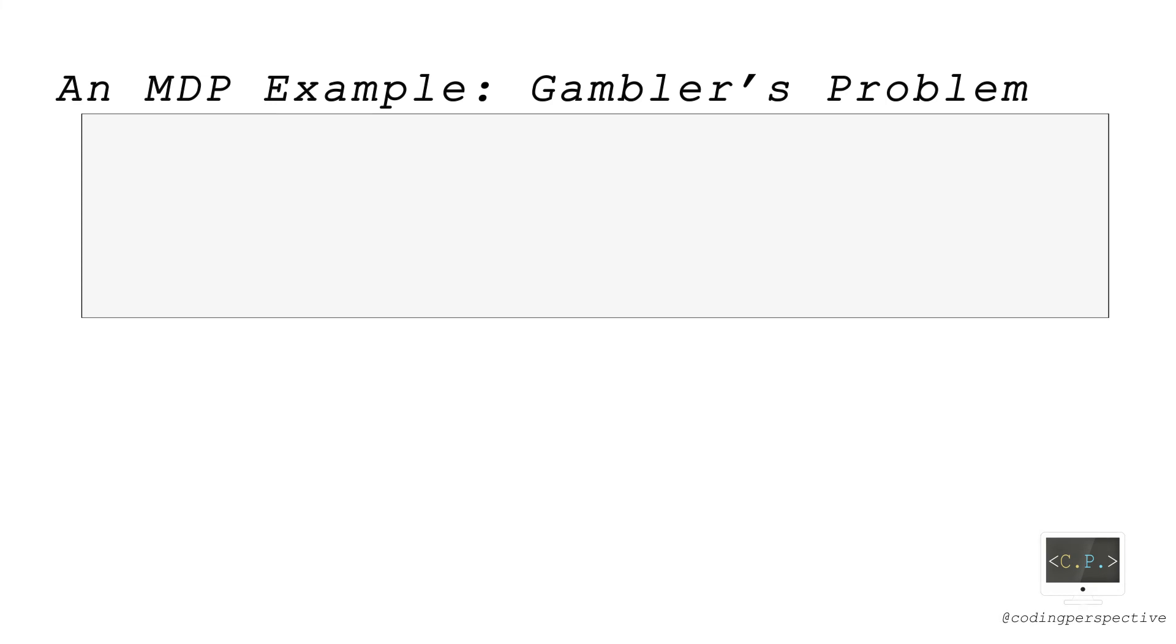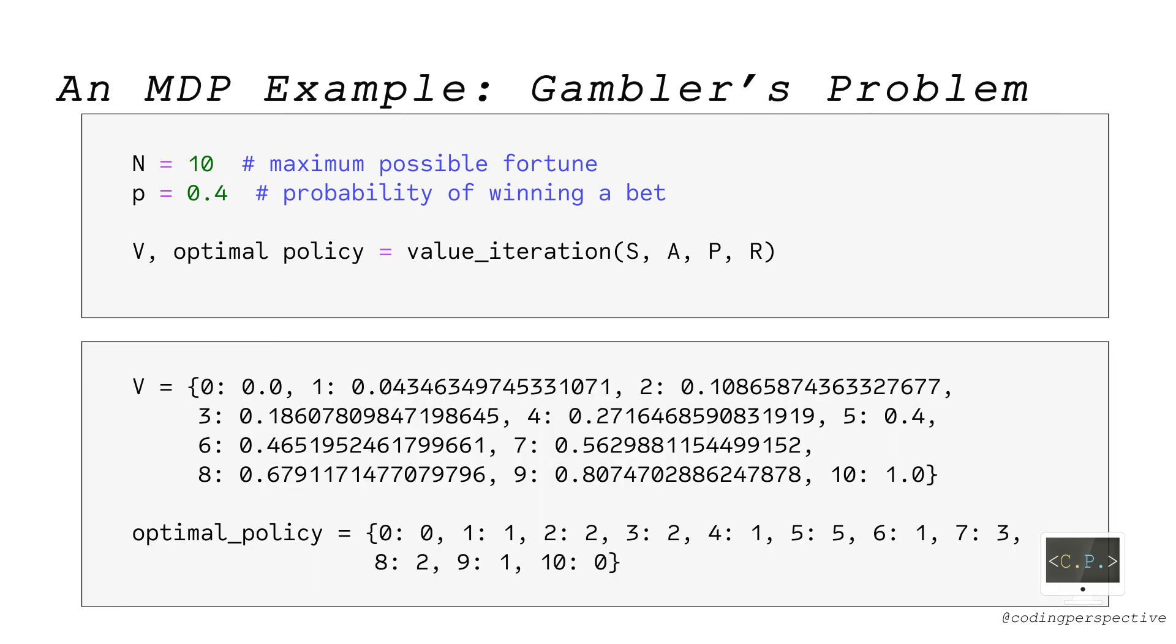For the gambler's problem example, let the maximum possible fortune N be equal to 10 and probability P be equal to 0.4. When we run our value iteration function for this problem, the outputs look like as you see. You can see how much the gambler needs to bet in each state by looking at the optimum policy dictionary. For example, the gambler needs to bet 5 when the current fortune is 5 and 3 when the current fortune is 7.